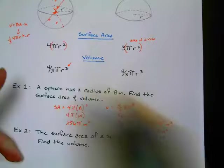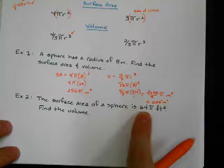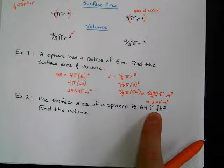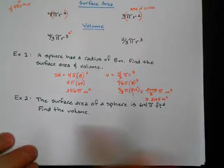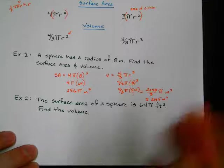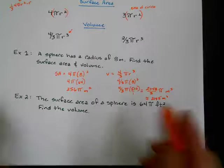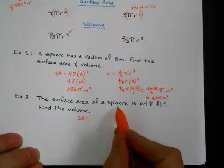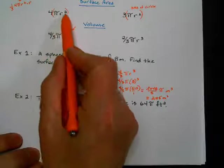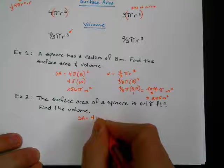Alright, next one. So the surface area of a sphere is 64π. Find the volume. So on problems like this, we're going to just write down our equations. We're going to write down our formulas. So the surface area formula for a sphere is 4πr² because it's four circles on the outside of the shape. So 4πr².